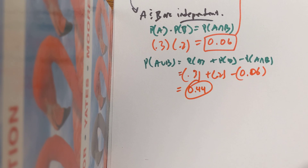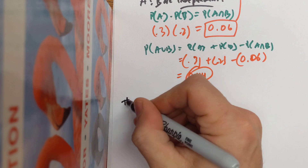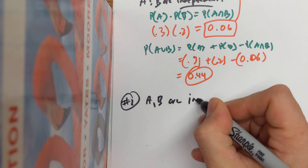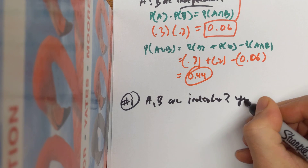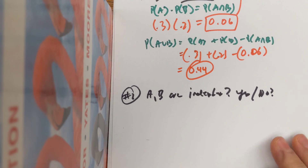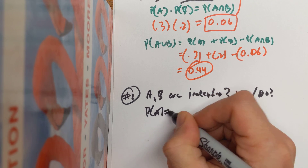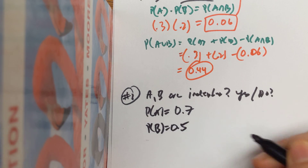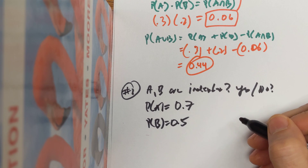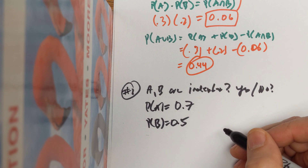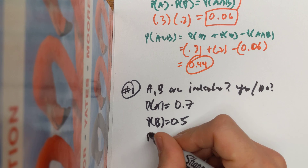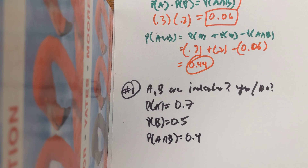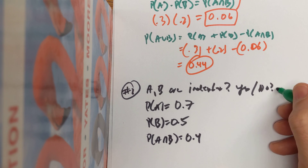Let's do another problem — something more basic. Let's try to decide if two events are independent. So: are events A and B independent? Let's get some facts. Let's say I told you that P(A) equals 0.7, the probability of B equals 0.5. That's not enough — tell me a third fact. Let's say the probability of A intersect B equals 0.4. Are these events independent?